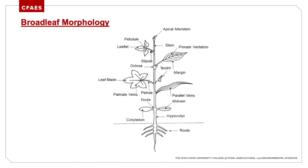Some basic broadleaf morphology — I'll reference terms like cotyledon, hypocotyl, petiole, acrea, stipule, and stem. There's a visual diagram so you can go back and look at exactly what I'm talking about. If you see a term you're not familiar with, don't be afraid to Google it and get a botanical explanation beyond what's provided in this PowerPoint.